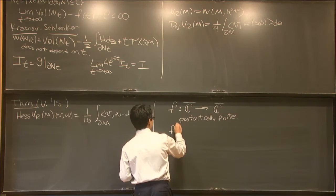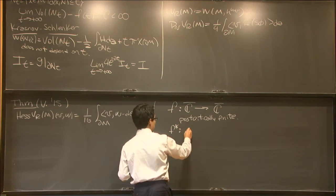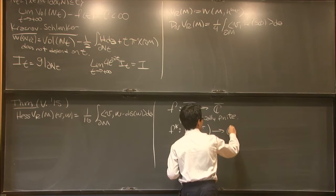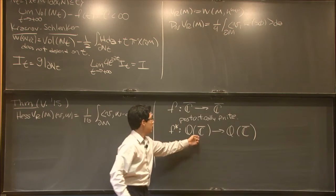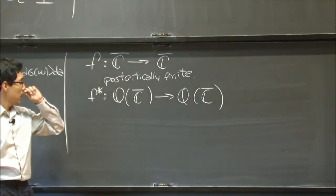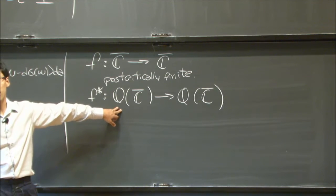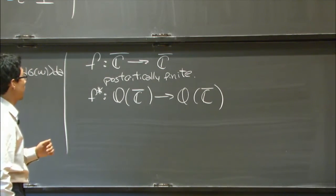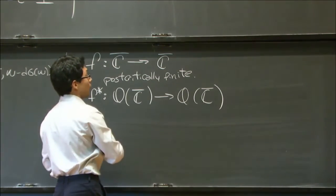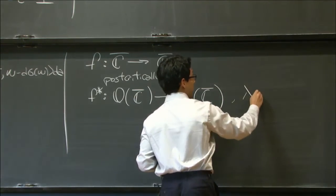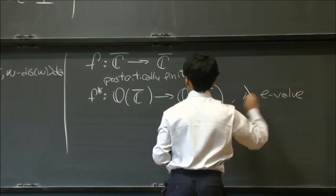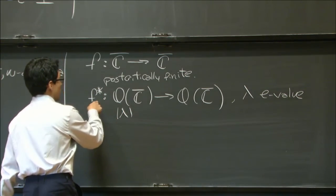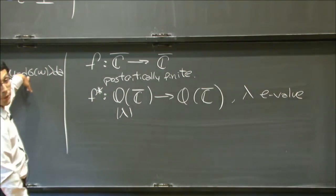For such a map, you can define, by taking a push forward, a linear map between these sets. Here, this is the linear space of holomorphic differentials with a single pole. It's just some finite dimensional space. And you have the following map. And say that here, you have lambda eigenvalue.